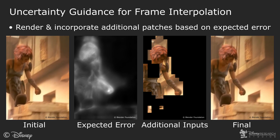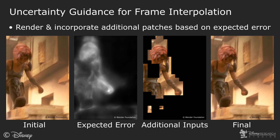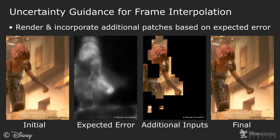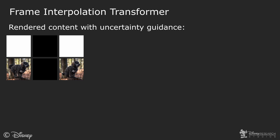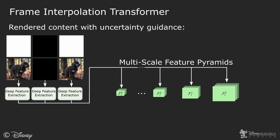Our method handles both traditional live action interpolation and uncertainty-guided rendering interpolation without any distinction. We achieve this by treating the source frames and the target frames in the same manner. For live action data, we simply use a black image as input for the middle frame. To aid distinction between valid and invalid inputs, we equip each frame with a binary mask before passing each frame separately through our deep feature extraction.